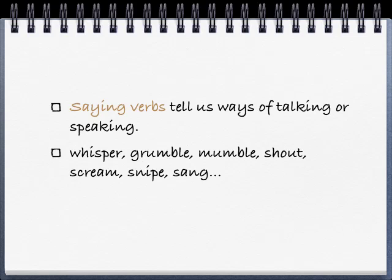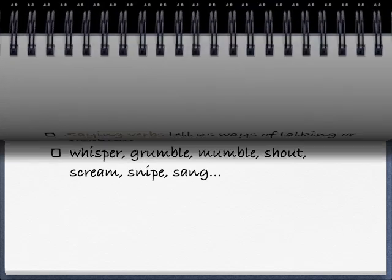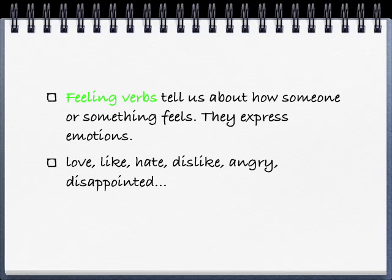Saying verbs tell us ways of talking or speaking. For example, whisper, grumble, mumble, shout, scream, snipe, sang. Feeling verbs tell us about how someone or something feels — they express emotions. For example, love, like, hate, dislike, angry, disappointed.